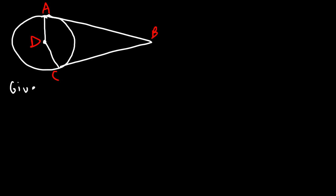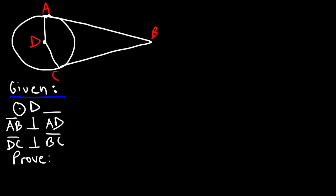Let's say you're given the following information: D is the center of the circle, so we have circle D. You're told that AB is perpendicular to AD and DC is perpendicular to BC. With this information, prove that AB is congruent to BC. Feel free to pause the video and try this problem.